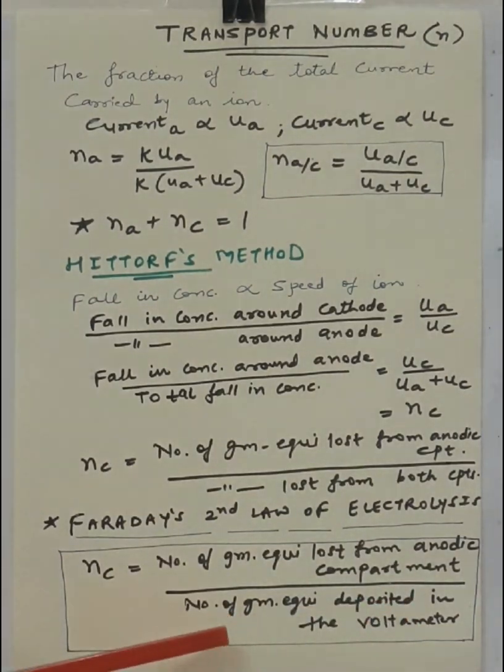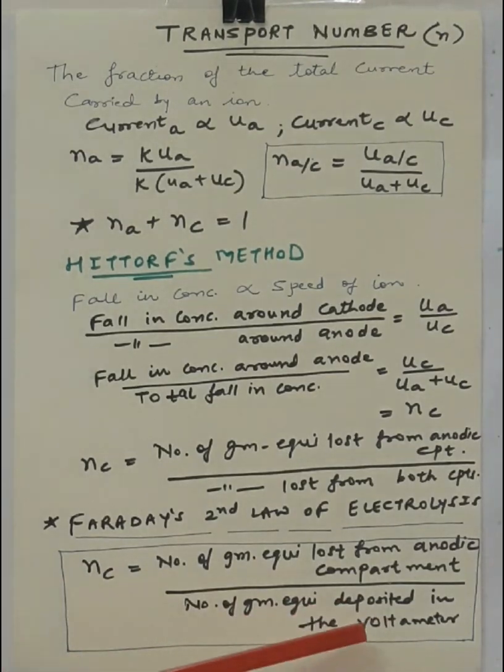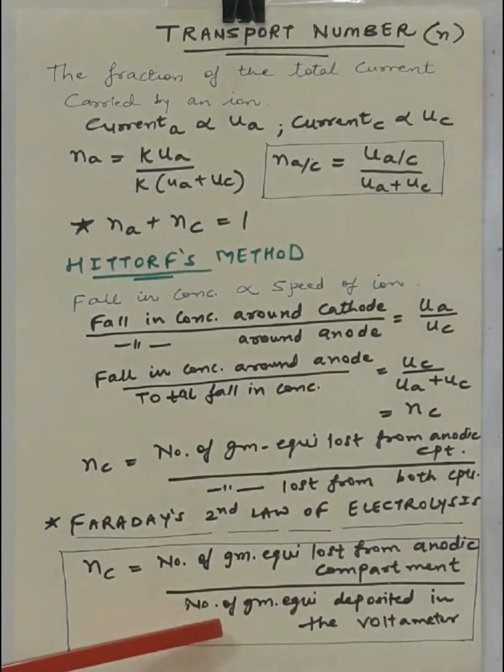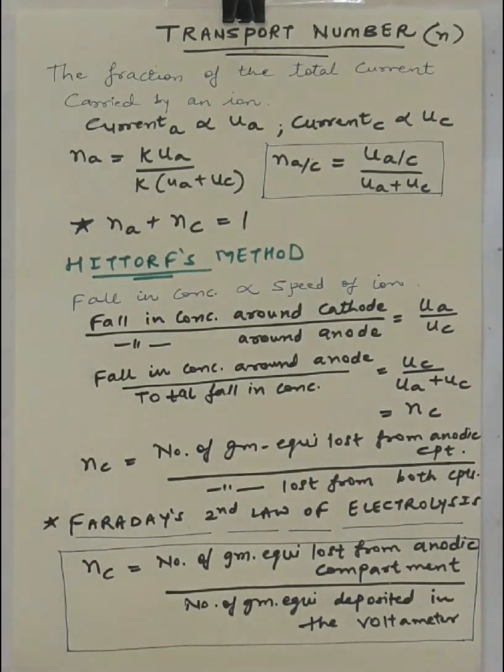So, what was going to happen is whatever the ions lost from both the compartments, those are equivalent to that deposited within the voltameter. You can directly take this value, you can find out the weight of the ions deposited in the voltameter, fill in the denominator in this particular formula and you can get the value for transport number of cation.